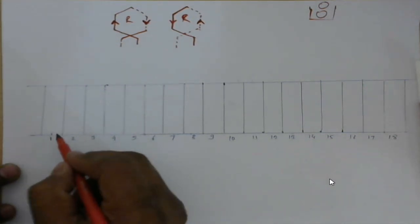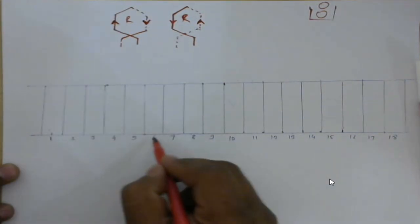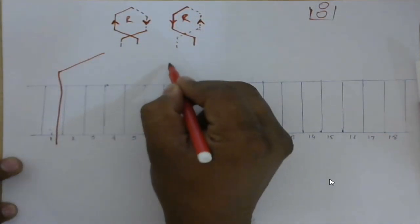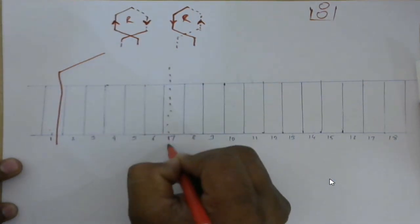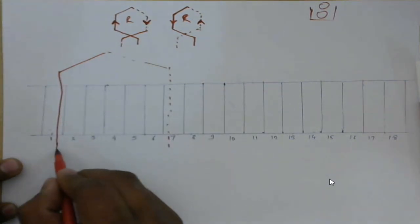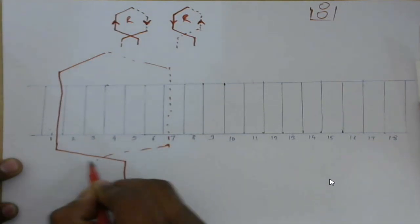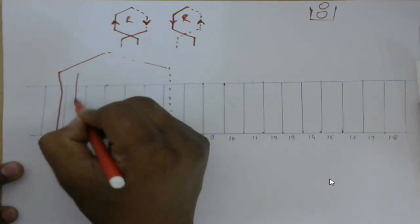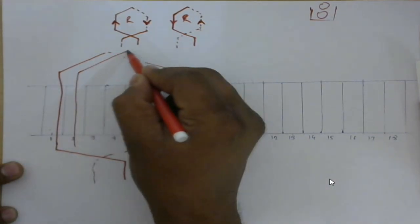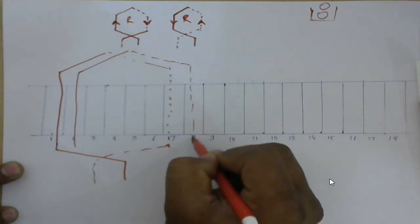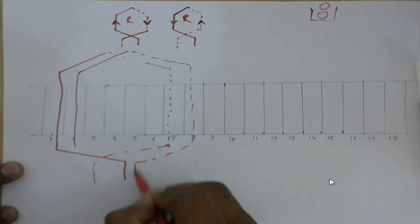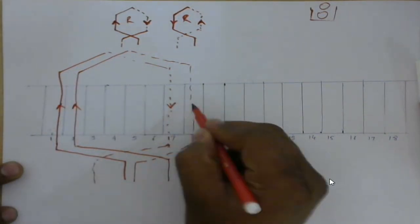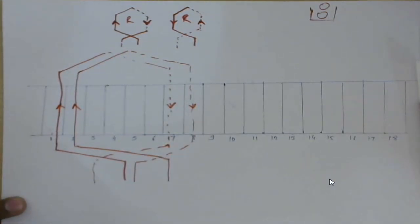For R-phase, the first coil goes from slot 1 to slot 7. I place the coil with the dotted line representing the second coil side. The second coil goes from slot 2 to slot 8. In the first coil, current in coil side 1 flows upward and in coil side 2 it flows downward.